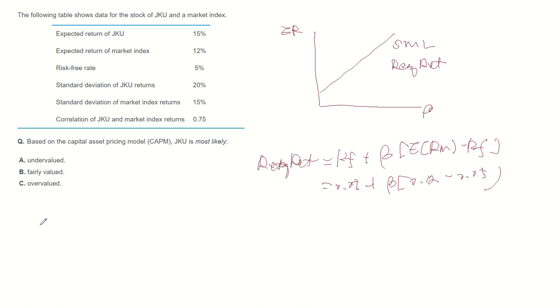We can calculate beta as correlation between stock and market multiplied by standard deviation of stock JKU divided by standard deviation of market.